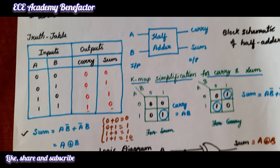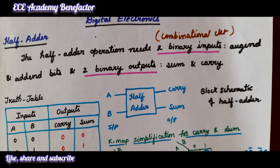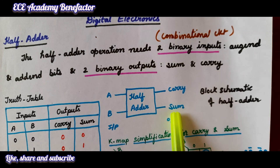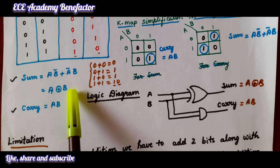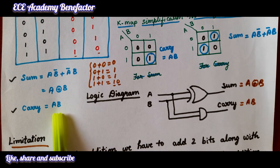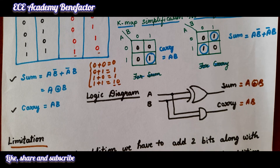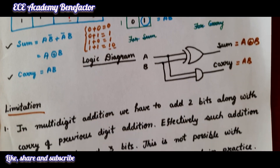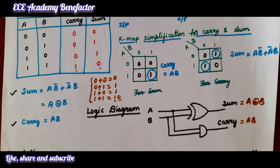To summarize, the half adder is a combinational circuit used for two-bit binary addition. It has two binary inputs and two binary outputs. The sum expression is A XOR B and the carry expression is A·B. I hope the class is clear. If you have any queries, you can post in the comment section. Thank you, good luck students.